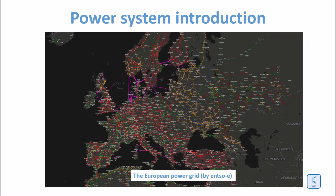Here you have the European grid, which is a synchronized grid with very long transmission line distances of several thousand kilometers — it goes from the eastern part of Turkey to the western part of Europe including Portugal, and even North Africa. All of this grid is synchronized. The color codes represent individual voltage levels: red is 380 kV, green is 220 kV, and the small dots represent large substations.